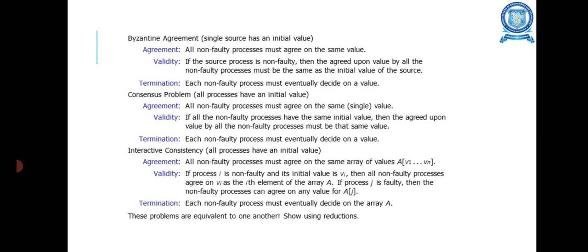Byzantine Agreement: A single source has an initial value. Agreement is that all non-faulty processes must agree on the same value. Validity: If the source process is non-faulty, then the agreed-upon value by all non-faulty processes must be the same as the initial value of the source. Termination: Each non-faulty process must eventually decide on a value.